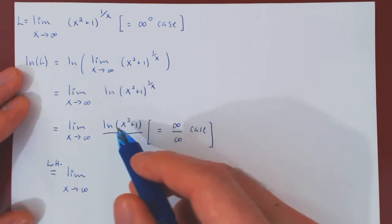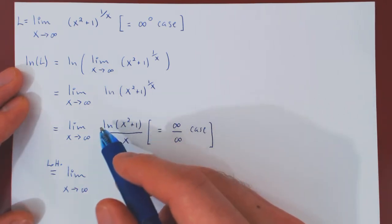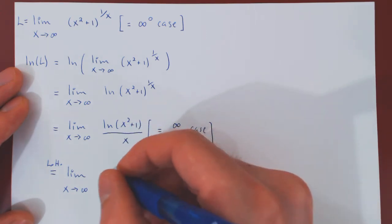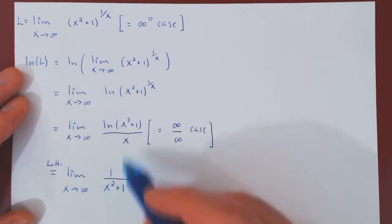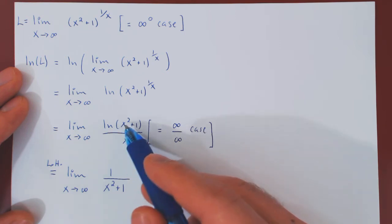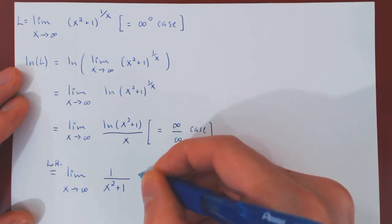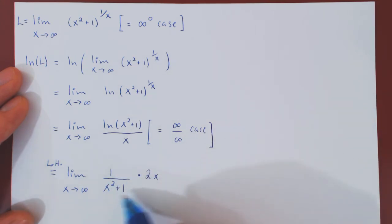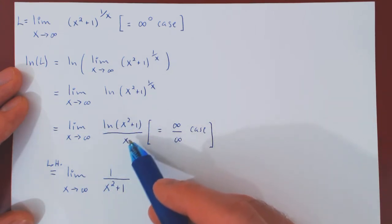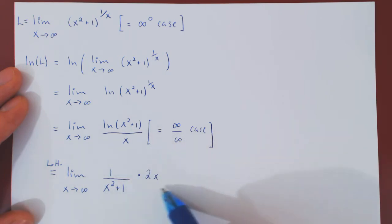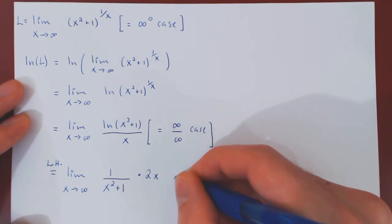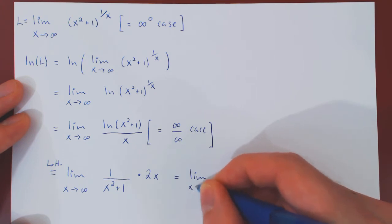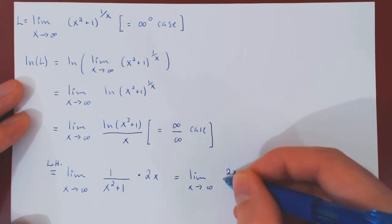So we differentiate the numerator. By the derivative of ln we get 1 over the argument, so 1 over x squared plus 1. But that is simply the derivative of ln times, by the chain rule, the derivative of the argument, which is 2x. So we have the derivative of the numerator over the derivative of the denominator. But the derivative of x is 1, so we don't have to write over 1. Well, we can simplify this a little bit.